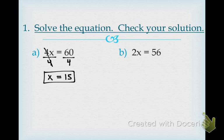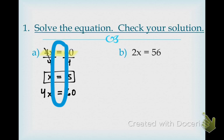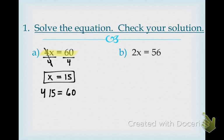We also have to check this. Going back to the original problem: 4 times x equals 60. I really want to see your equal signs all lined up so your problem looks nice and neat. Do I know what x is? Yes, it's 15. Put it in parentheses because we know that means to multiply. What is 4 times 15? 60. Rewrite that 60, drop down your equal sign, and there's your 60. Does 60 equal 60? Yes, it does.